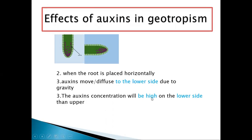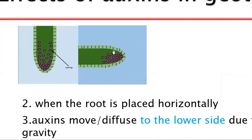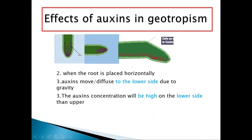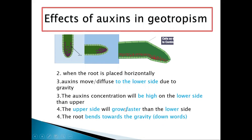The auxin concentration will be high on the lower side compared to the upper side. The lower side will grow less than the upper side because the lower side has more auxins inhibiting growth. The upper side has no inhibition, so it will grow faster than the lower side. Therefore the root will bend towards gravity — it will grow downwards — and the shoot ends up bending toward gravity.